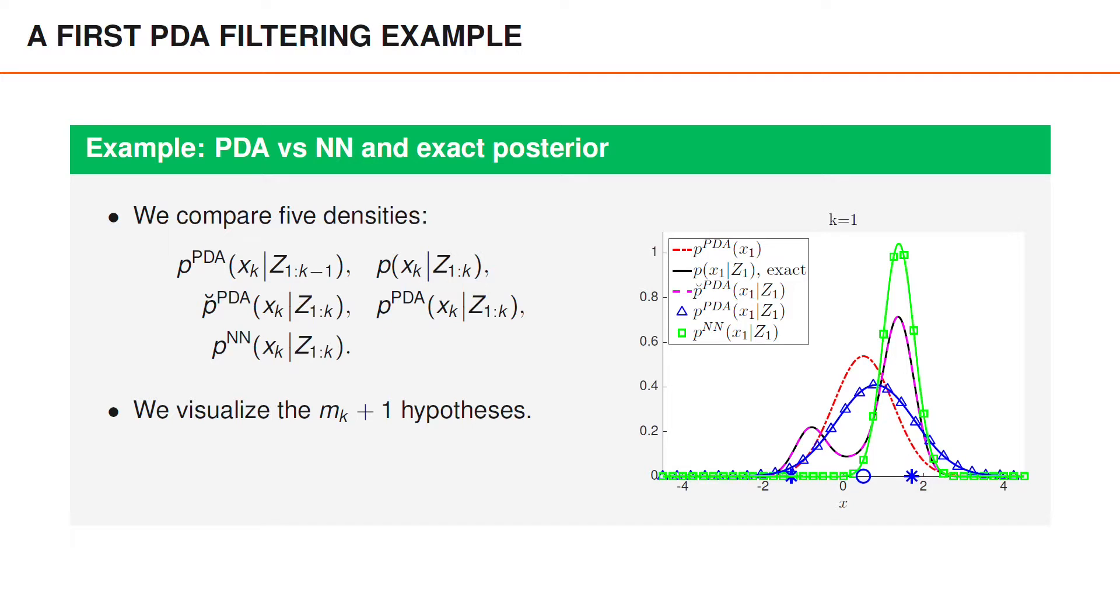At time 1, you can see that P-breve is bimodal. The PDA approximation to the posterior, therefore, has a much larger variance than the nearest neighbor approximation to the posterior. Neither of the filters approximate the posterior density particularly well. Note that P-breve is bimodal since both the measurement at 1.7 and minus 1.3 are reasonable object measurements.